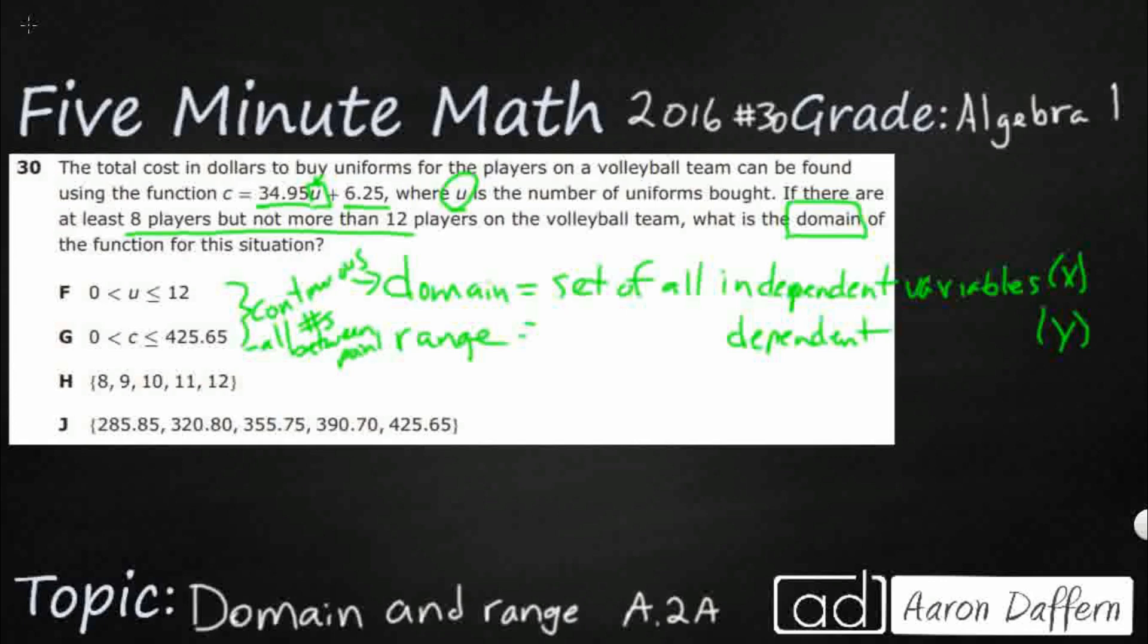So we've got two different ones here. We've got 0 and 12. I understand the 12 because there's 12 players, but I don't get where there's zero players because it says there's at least 8, so F is wrong.